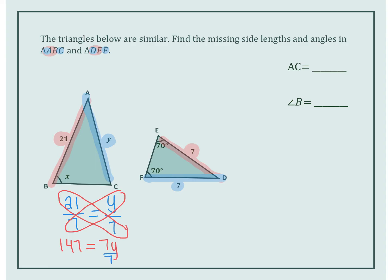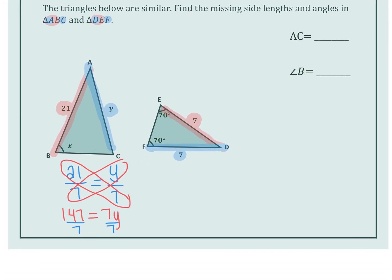Now divide both sides by 7. And you actually get that Y is equal to 21. So this side AC is equal to 21.